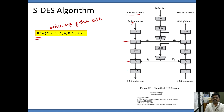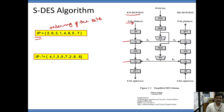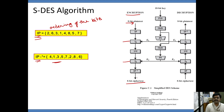The output from the second round function is given to the inverse initial permutation with the help of the IP inverse table. This inverts whatever permutation was done in the IP step. The output from the inverse initial permutation is regarded as the ciphertext for the given 8-bit plain text.